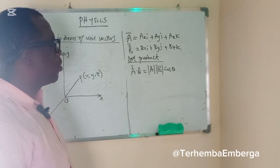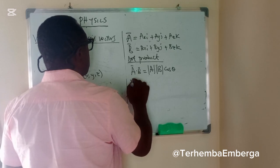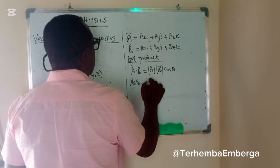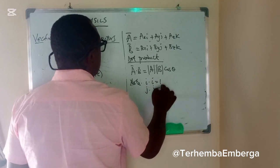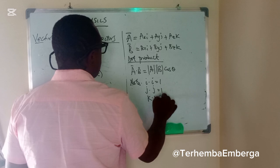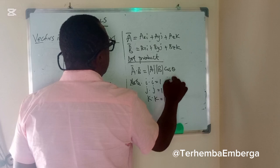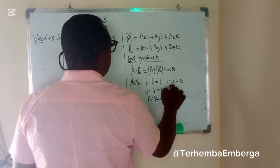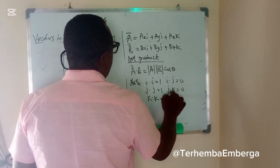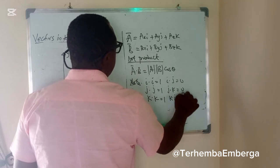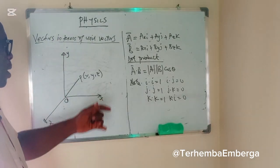Before we can go into the dot product proper, we need to know that I dot I is equal to 1, J dot J is equal to 1, and K dot K is equal to 1. Then when you talk about I dot J is 0, J dot K is 0, and K dot I is 0. This is what we call the identity in vectors.